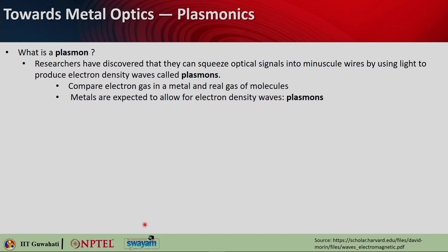When we talk about plasmonics, we need to understand what a plasmon is. Researchers have developed ways to squeeze optical signals into minuscule wires by using light to produce electron density waves called plasmons. You can compare the electron gas in a metal to a real gas of molecules. Metals support these electron density waves, called plasmons. A simple analogy is like sound waves — the way a sound wave propagates in air, you can think of surface or electron density waves in metal as plasmons.